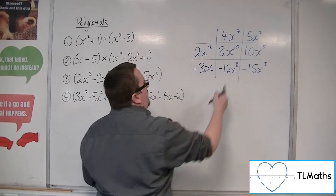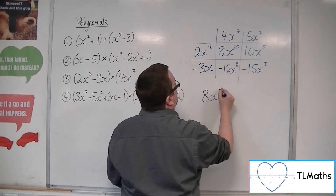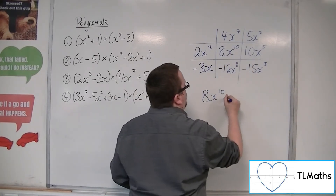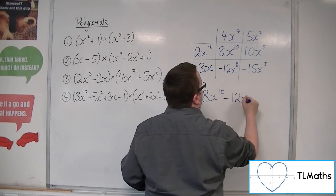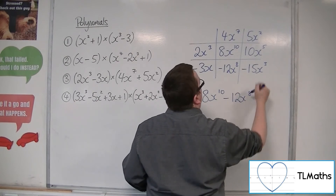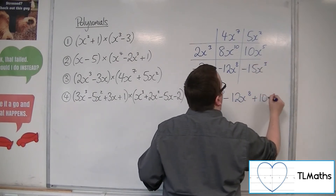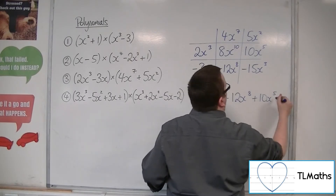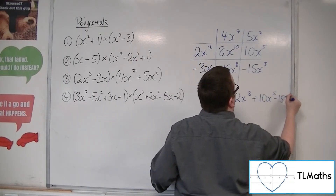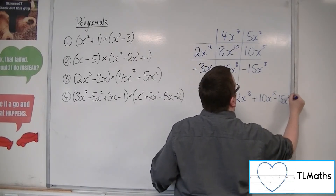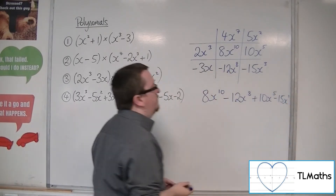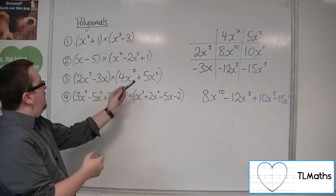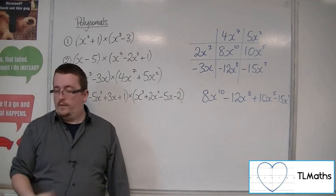And minus 3x times 5x squared is minus 15x cubed. So we've got 8x to the 10, minus 12x to the 8, 10x to the 5, and minus 15x cubed. And that's what we get when we expand those two brackets.